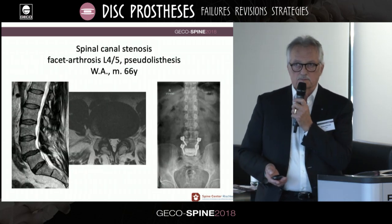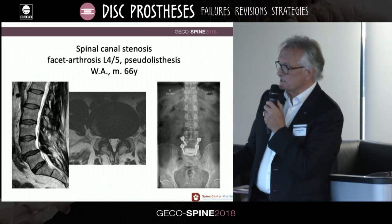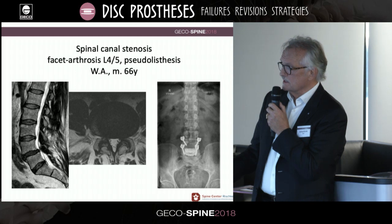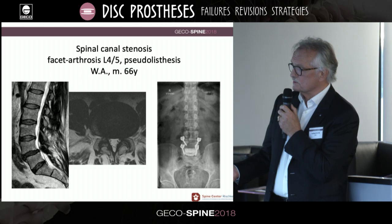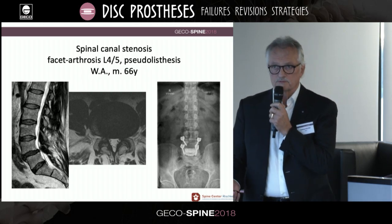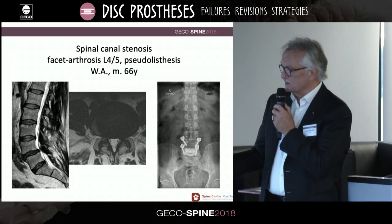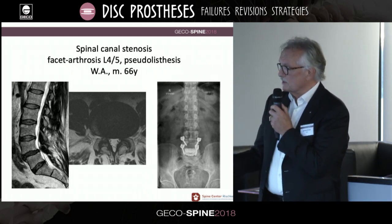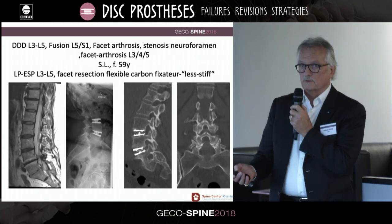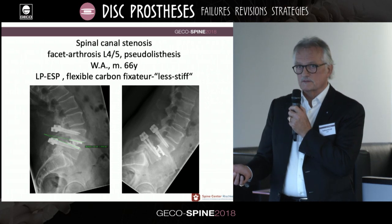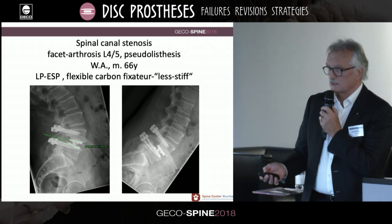This patient had spinal canal stenosis with severe facet arthrosis and combined narrowing of the spinal canal, due to the disc prosthesis and facet hypertrophy. I resected the facets and put in the dynamic fixator from dorsal and from anteriorly a disc prosthesis. Also in this patient, we can see good flexion and extension in the functional X-rays two years later.